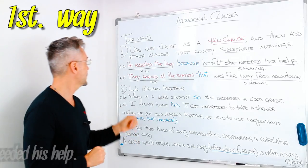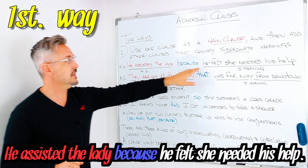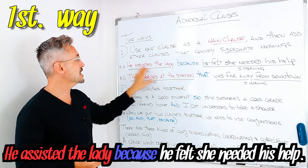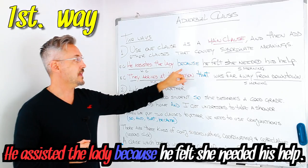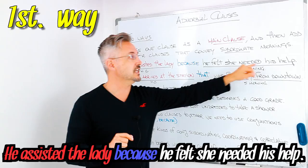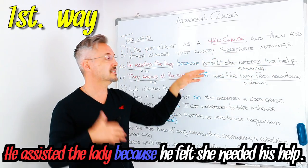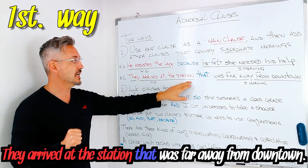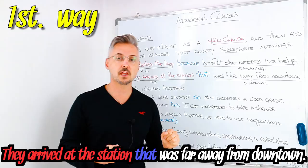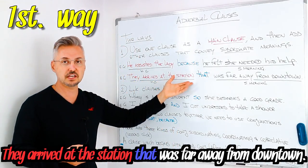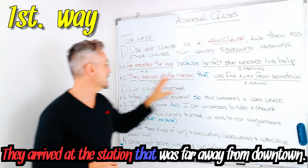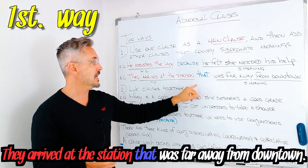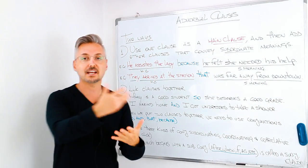Let's take a look at the first example: 'He assisted the lady because he felt she needed his help.' The main clause here is 'He assisted the lady,' and 'he felt she needed his help' is the subordinate meaning — secondary in importance. Second example: 'They arrived at the station that was far away from downtown.' The main clause is 'they arrived at the station,' and 'was far away from downtown' is the subordinate part — extra information in the sentence.